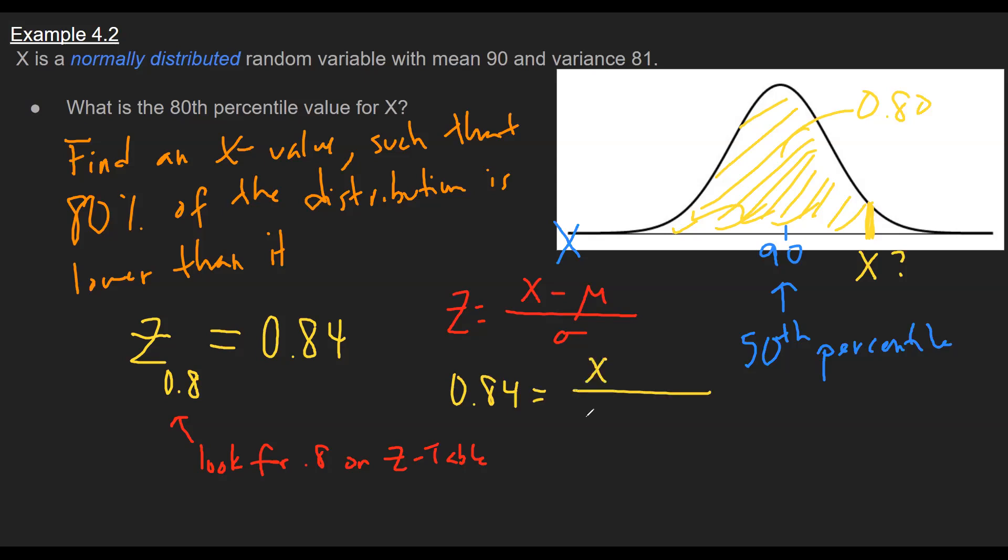And so for this particular problem, we found this Z score to be 0.84. The X is what we're looking for, the mu is the center of the graph we know is 90, and then the sigma is also given to us as 9. So now once I solve for X, that would represent my 80th percentile. So going through a little bit of algebra here, the value for X I end up getting is 97.56, which makes sense that it's on the right side of the 90 that our picture shows. And that wraps up this example for the normal distribution.